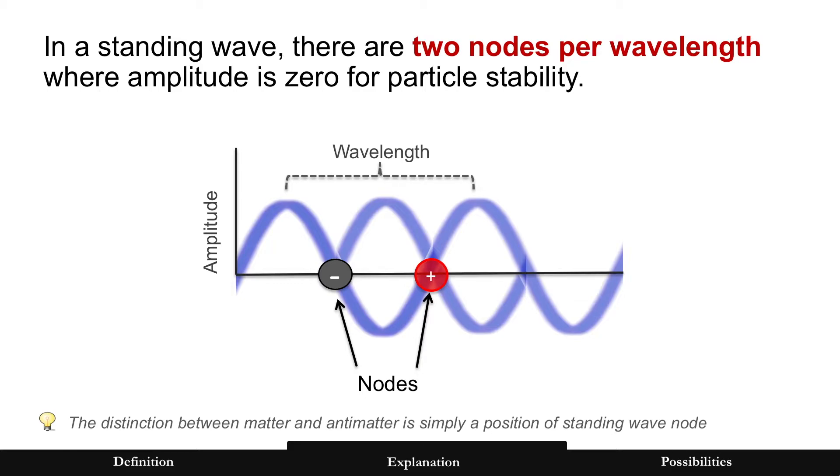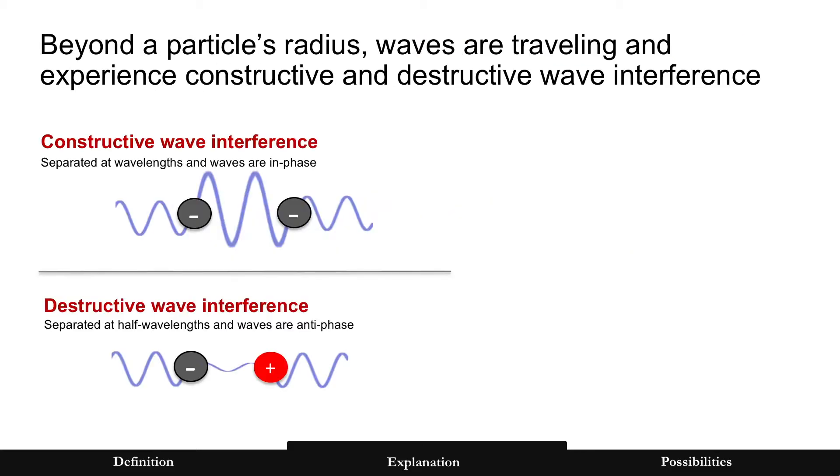And that's really the distinction between matter and antimatter. It's a position on this wave since there are two nodes. And those nodes are spaced exactly at a half wavelength from each other. And that spacing, either a wavelength or a half wavelength, makes a difference between constructive wave interference or destructive wave interference.